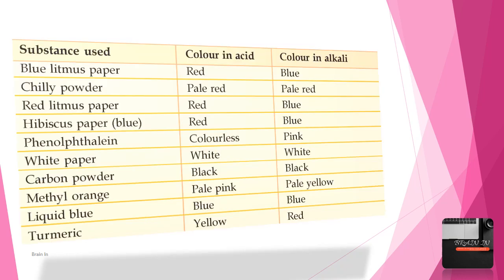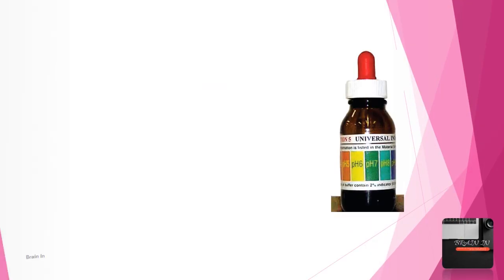Indicator color chart: Blue litmus paper turns red in acid and remains blue in alkali. Red litmus paper remains red in acid and turns blue in alkali. Hibiscus paper turns red in acid and blue in alkali. Phenolphthalein is colorless in acid and pink in alkali. Methyl orange is pale pink in acid and pale yellow in alkali. Universal indicator is a mixture of different indicators. Depending on the strength of the acidic or alkaline nature of a solution, universal indicator gives different colors, which can be compared with the color chart affixed outside the bottle.